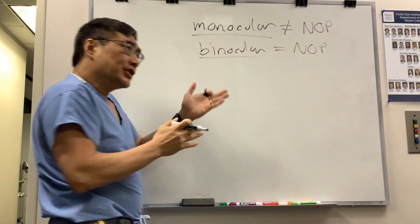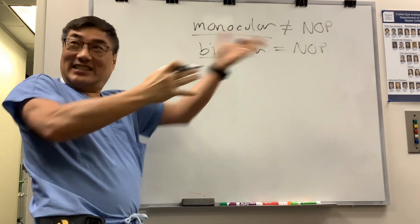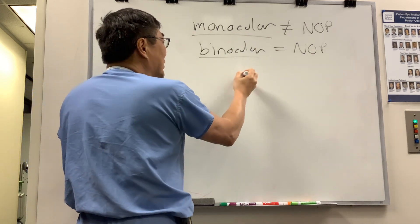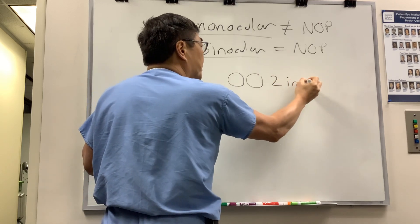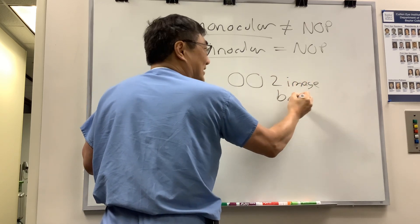However, there are some conditions where it's monocular and it's still neuro-op. So when would someone see two or more of an image from brain? That's the question.